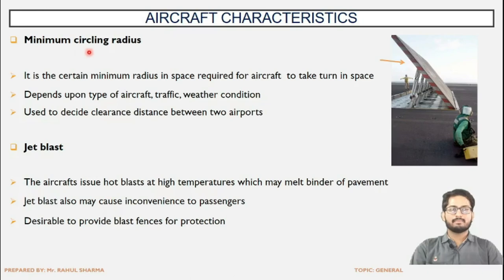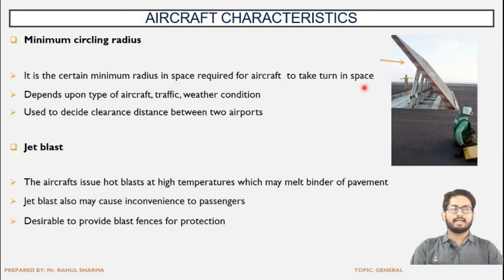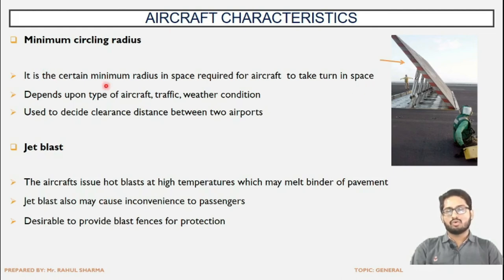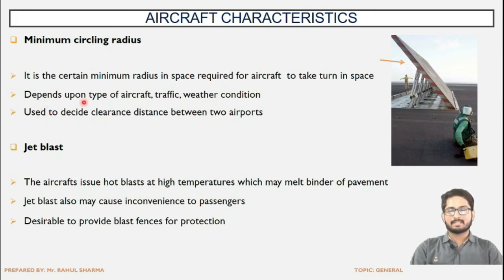Next is the minimum circling radius. It is the minimum radius in airspace required for an aircraft to be turned. For example, if an aircraft is about to land but another aircraft is using the runway, the landing operation cannot be carried out, so the aircraft moves in the airspace. The minimum circling radius depends upon the type and dimensions of the aircraft.